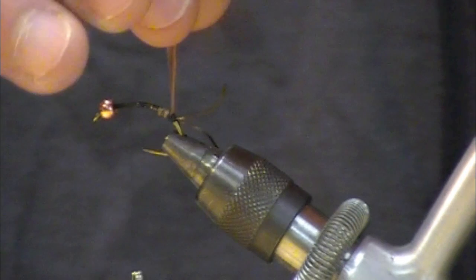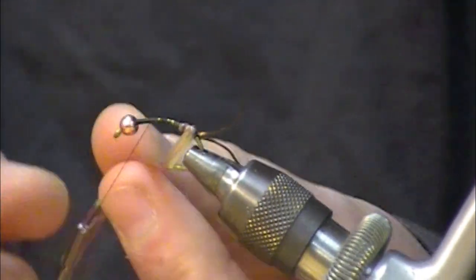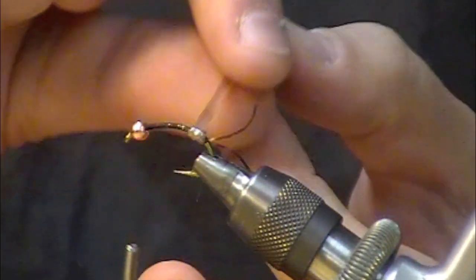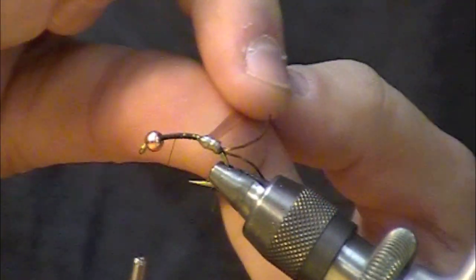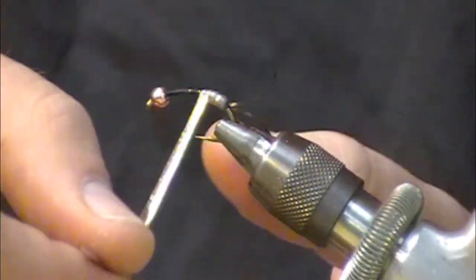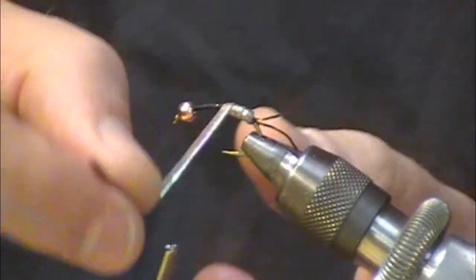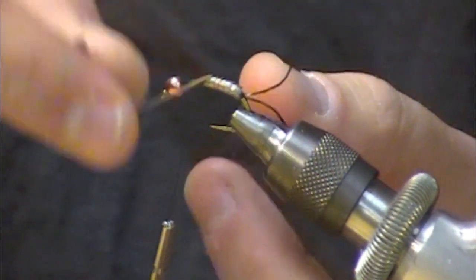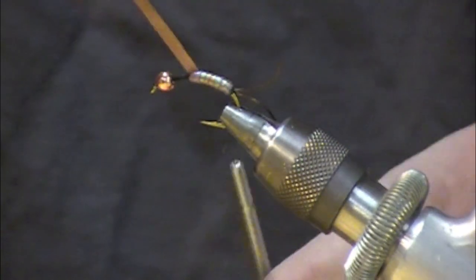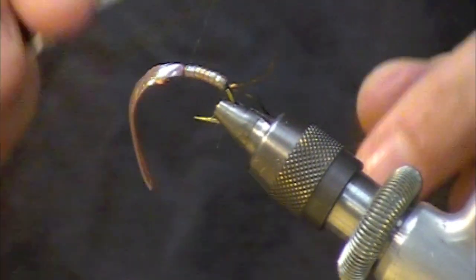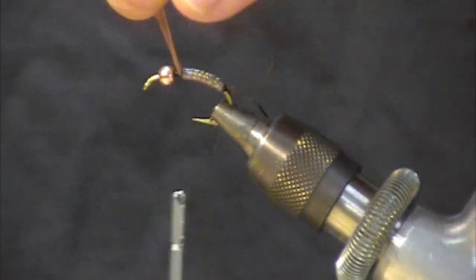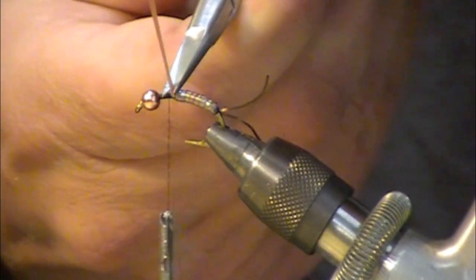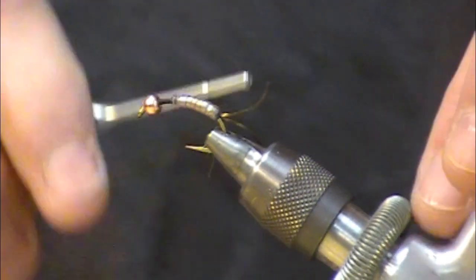I'm going to use this as the abdomen piece. So I'm just going to wrap it, one wrap on top of the last one a little bit to create some really nice segmentation. I'm going to go up to about the halfway point. I'm going to stretch that tight a little bit and give it a snip. It really reduces your bulk.